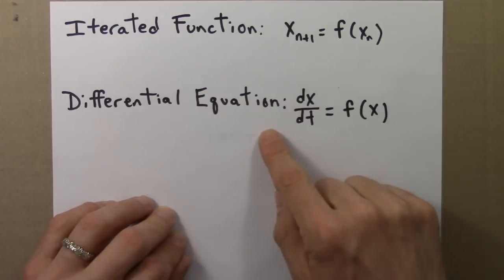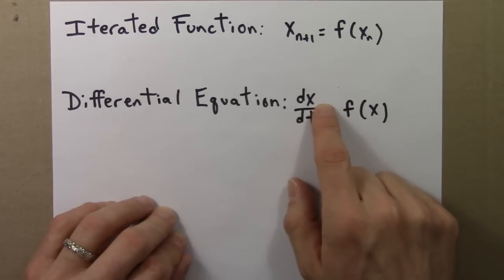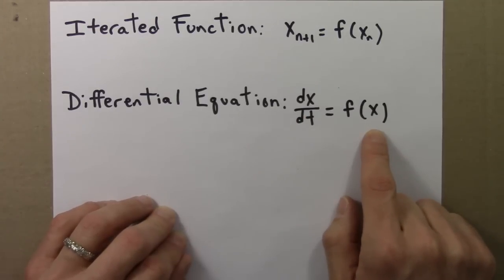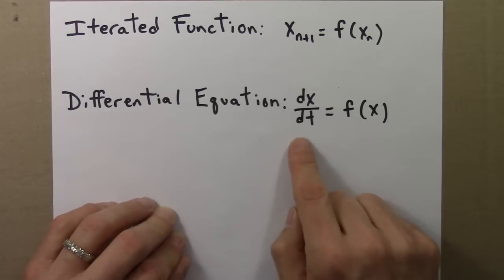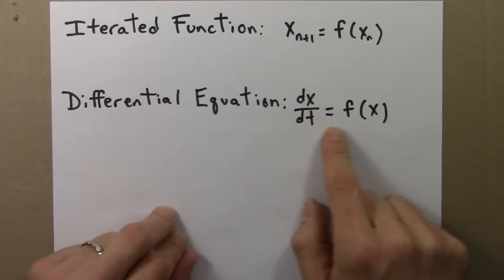A differential equation is an equation involving the derivative of a function. So here the function is x of t, and this says that the derivative of x is a function of x. Let's unpack this. The derivative of x means the instantaneous rate of change of x. So this tells us how x is changing. How x is changing depends on x. It's a function of x. If you tell me x, I can tell you how fast x is changing.